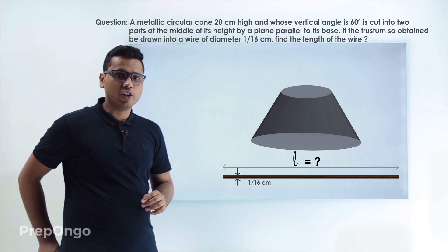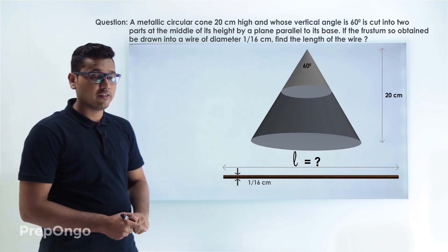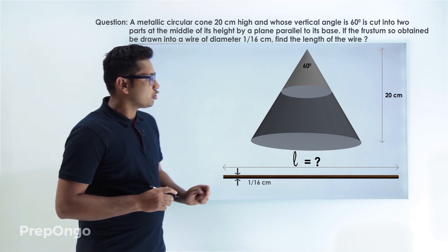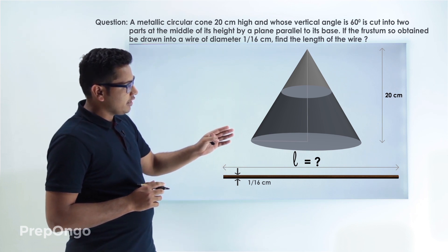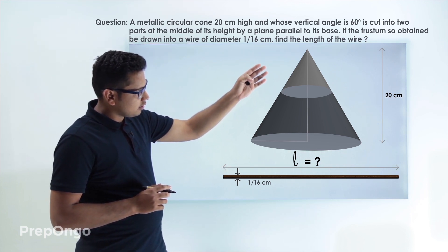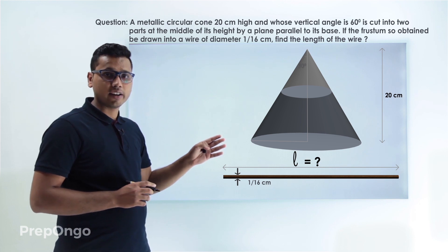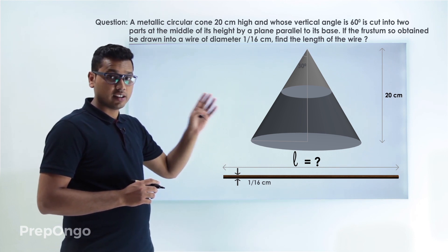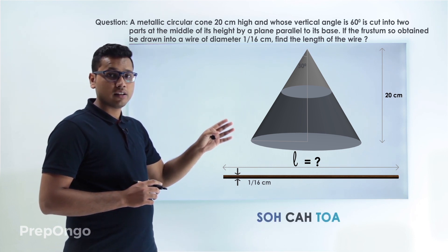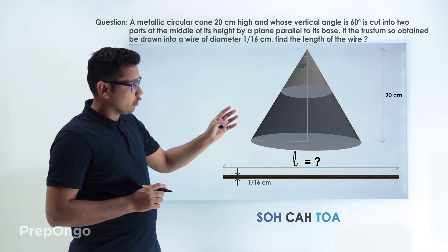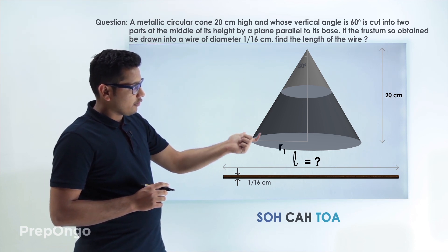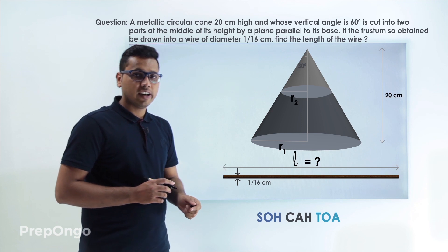Now to calculate the volume first of all we should have the radius. So to calculate the radius we just consider this right angle triangle and by considering this right angle triangle we can apply SOHCAHTOA and get the value of radius R1 and R2. So let's apply.